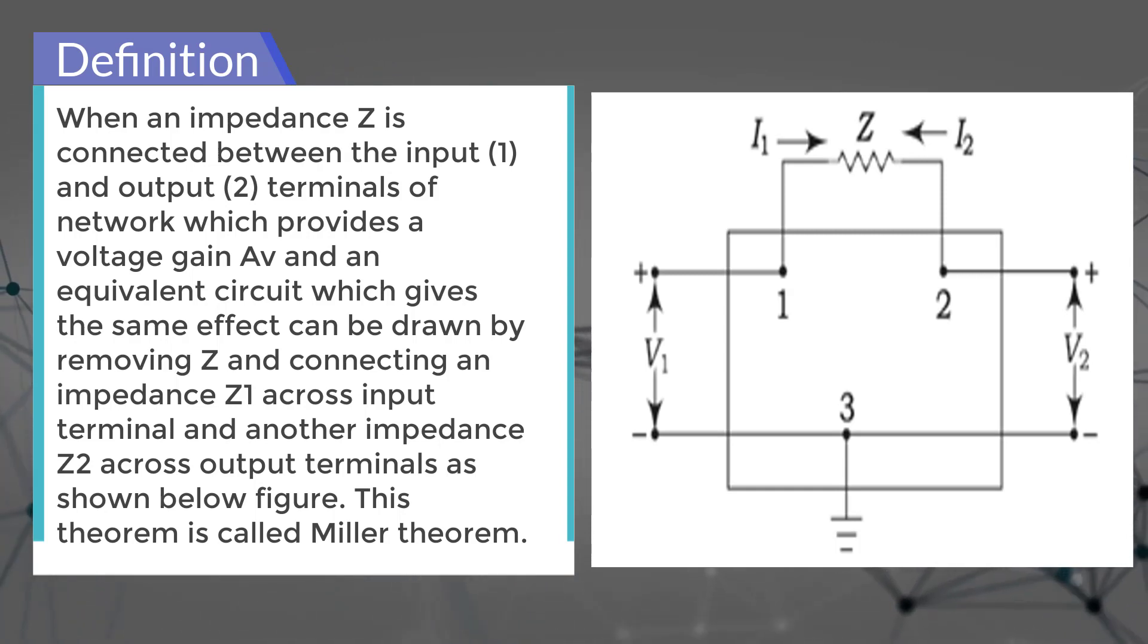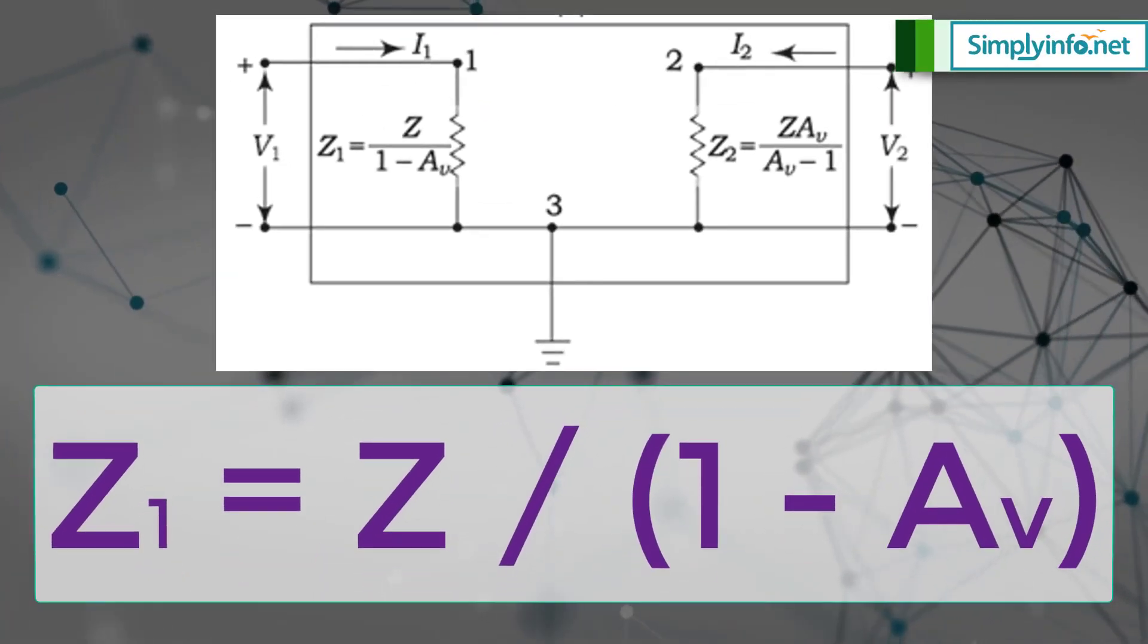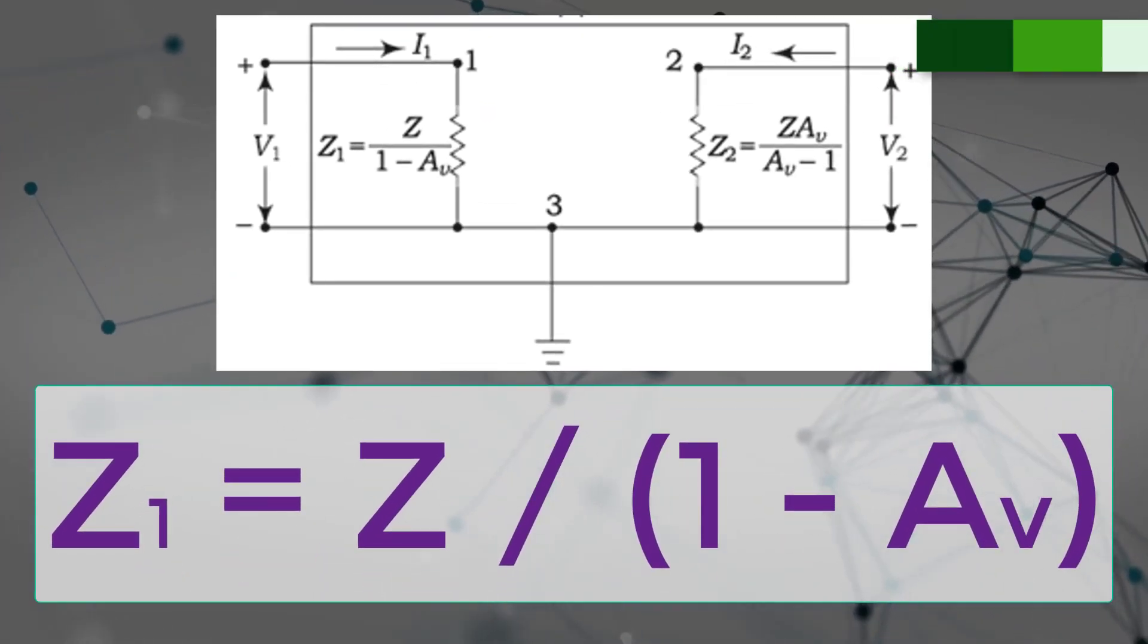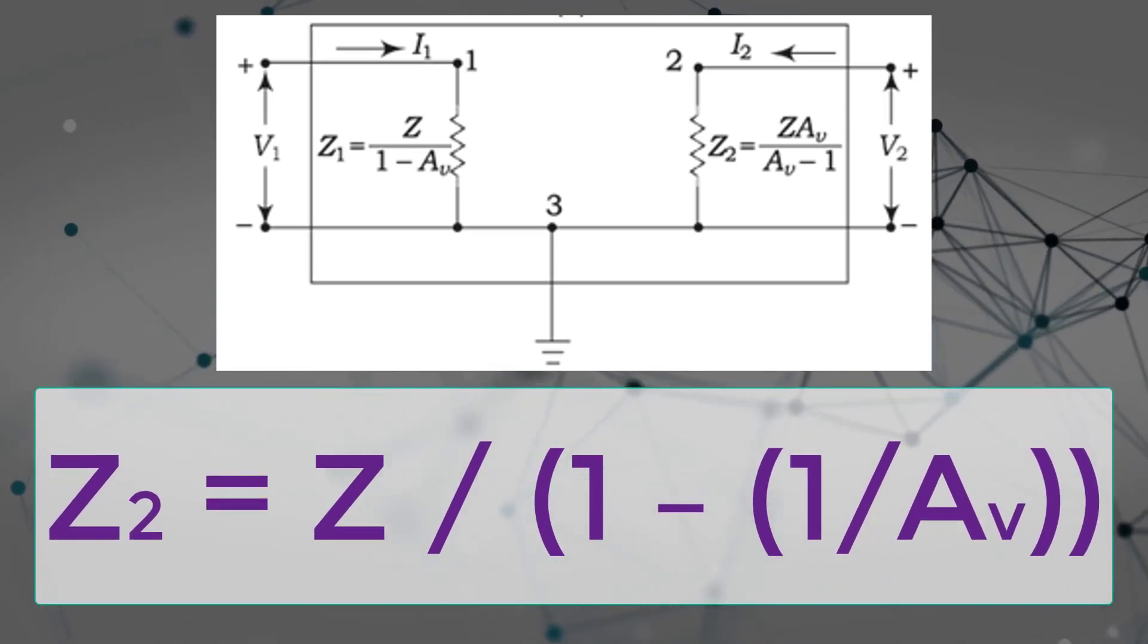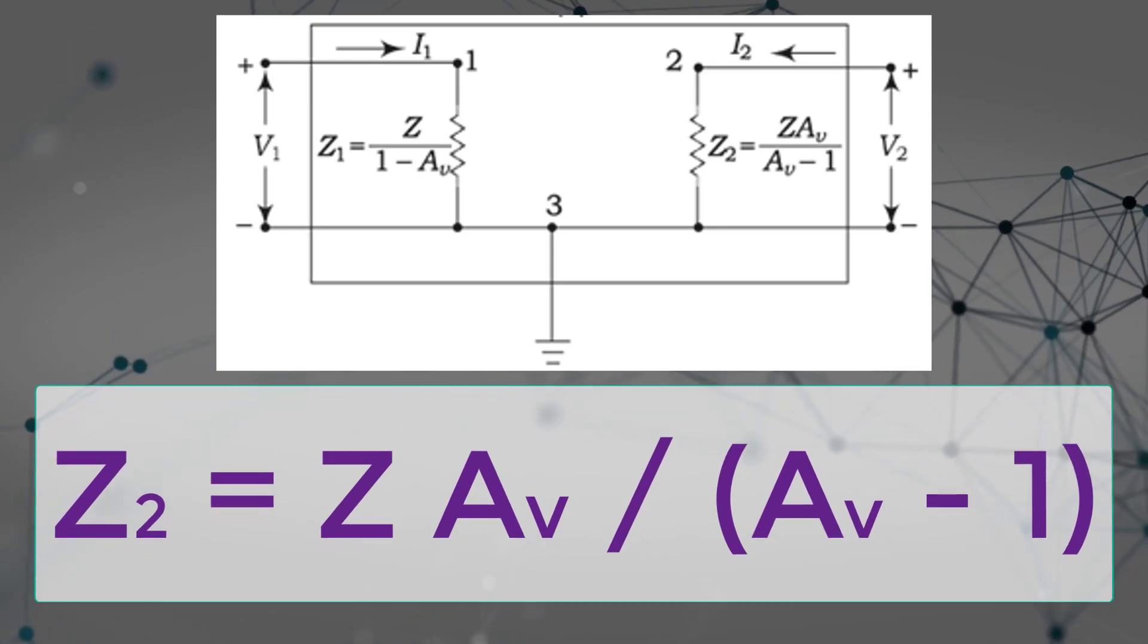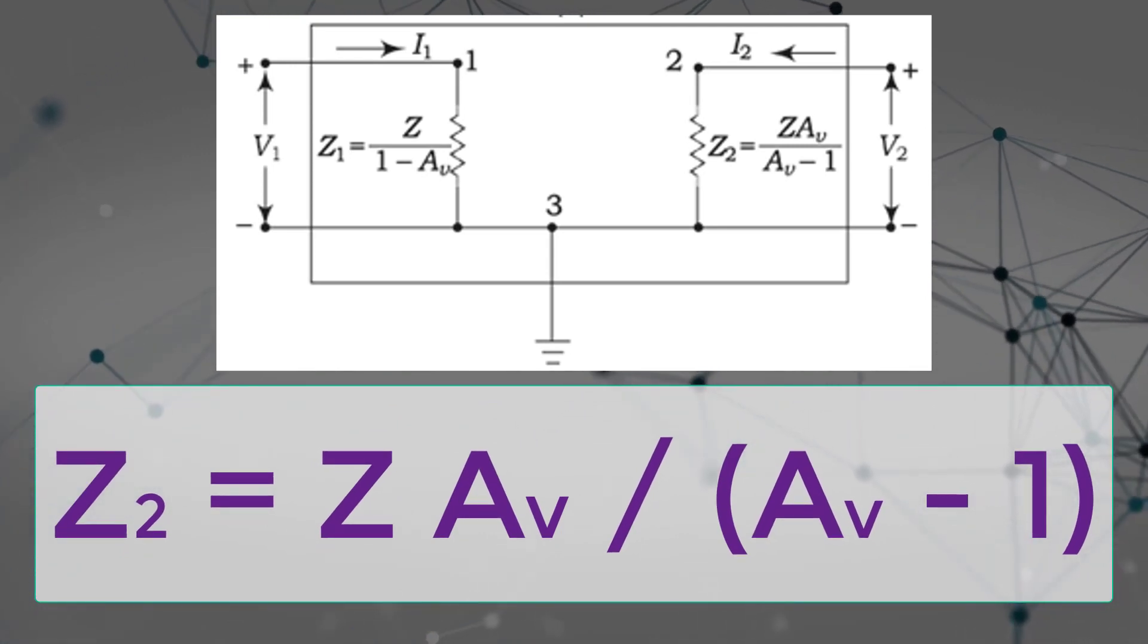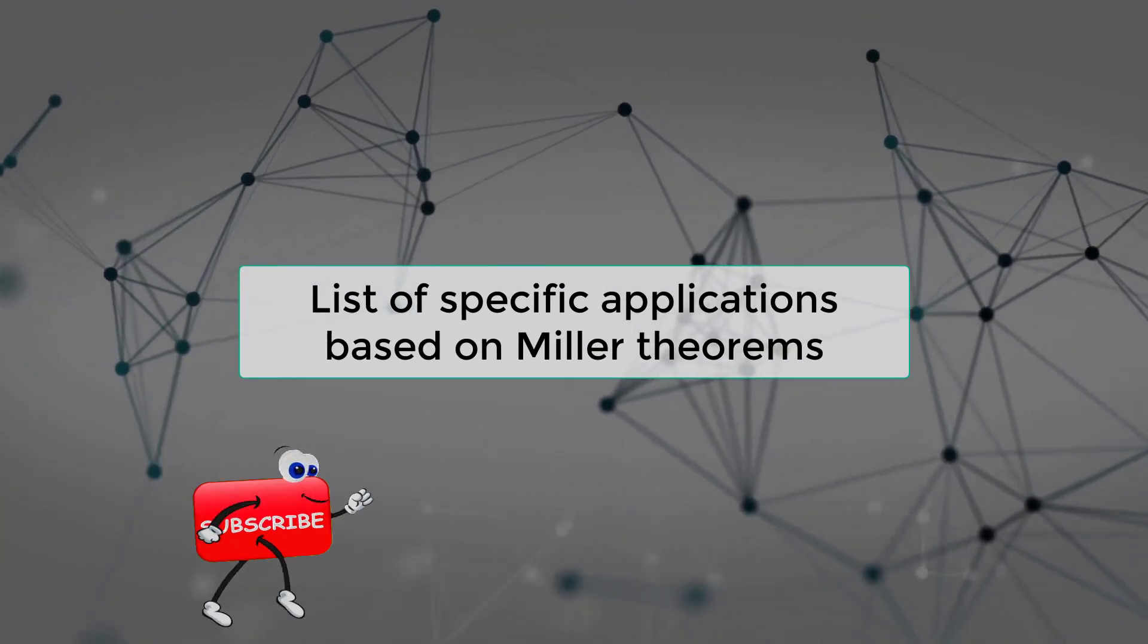This theorem is called Miller theorem. Z1 equals Z divided by (1 minus Av). Z2 equals Z divided by (1 minus 1 divided by Av), or Z2 equals Z times Av divided by (Av minus 1). List of specific applications based on Miller's theorem: